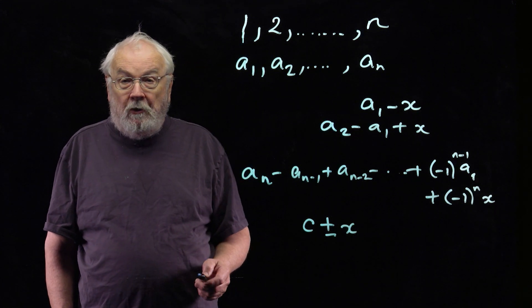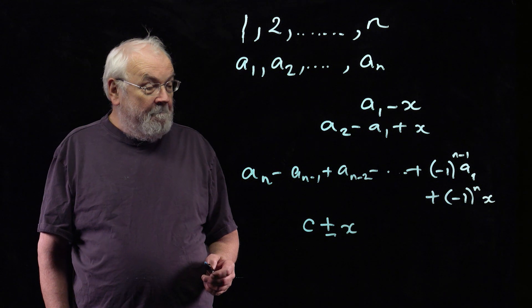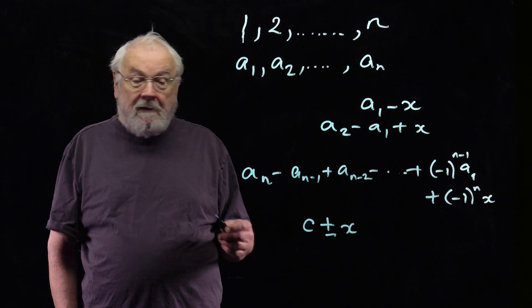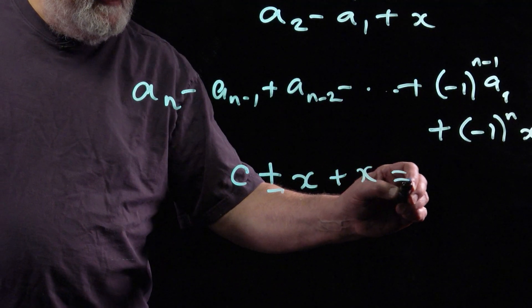The constant depends upon the order in which the cards are arranged. And in the trick, you're supposed to now add x and get 0.